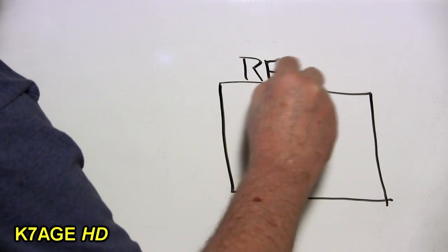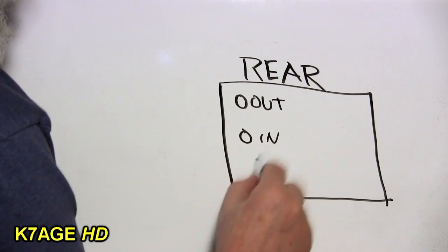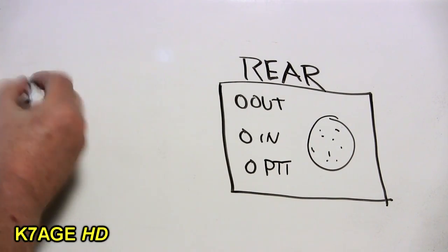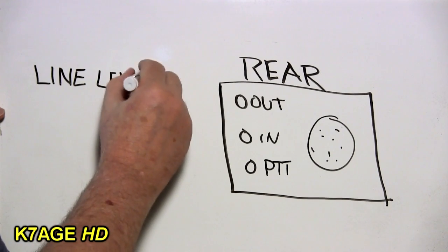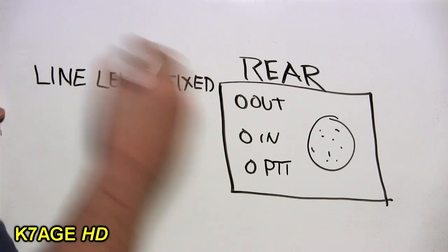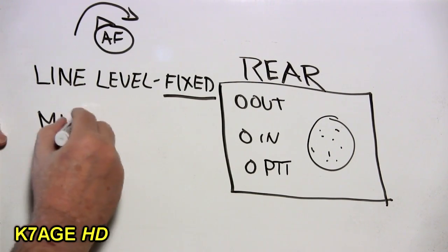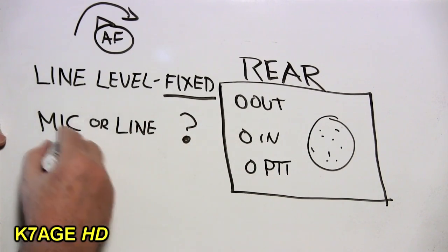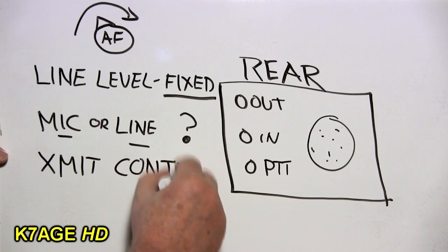Many radios have connectors on the rear of the radio as well. Audio out, audio in, and push to talk. If you don't have separate connectors these signals may be available on a multi-pin connector. Now the audio output is typically line level and it's fixed so as you vary the AF volume on the radio the level stays fixed and does not change. Audio input on the rear of the radio may be mic level which is low or line level which is high. You'll have to check your manual to see what you have. And there's also a connector for a push to talk signal.